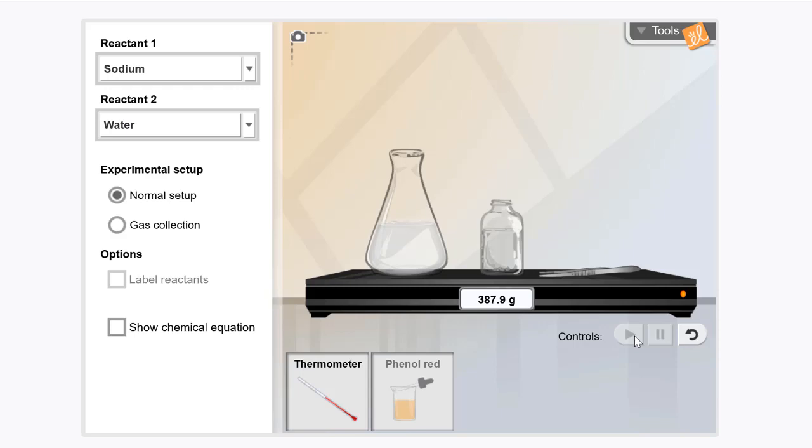Let's run some more experiments to discover other evidence that indicates a chemical change has taken place. Let's click reset and grab the thermometer and drag it to the flask of water. By clicking play, we allow the reaction to start. When the reaction is over, we can compare the initial and final temperatures.